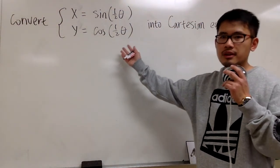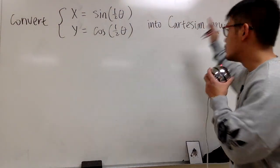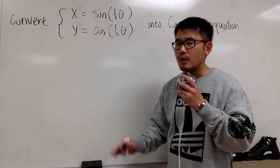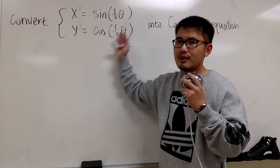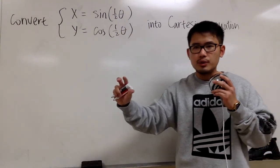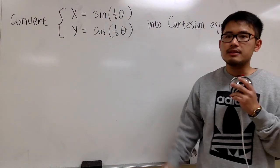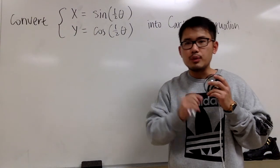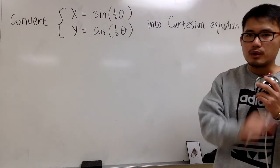Here we have this parametric equation, and we want to change this into Cartesian equation. Namely, we are going to get rid of the parameter theta here. Our answer at the end should be an equation with just x and y. That's the Cartesian equation, and I like to call that the rectangular equation as well, because x and y only.